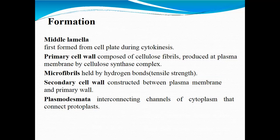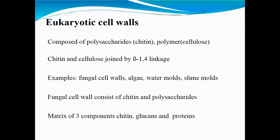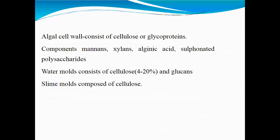In eukaryotic cell walls, we have polysaccharides including chitin polymers similar to cellulose. Chitin and cellulose are joined by beta-1,4-linkage to give support. Examples include fungal cell wall, algal water mold, and slime mold. The fungal cell wall consists of chitin and polysaccharides, with a matrix of three components: chitin, glucans, and proteins. Algal cell walls consist of cellulose and glycoproteins. Components for algal cell walls include mannans, xylans, alginic acid, and polysaccharides. Water mold consists of cellulose at about 4 to 20% and glucans. Slime molds are also composed of cellulose.